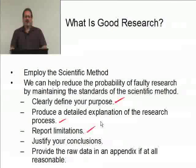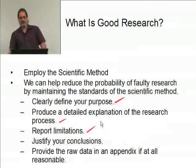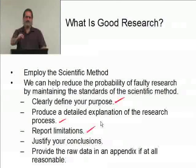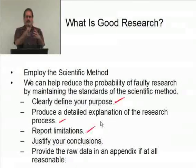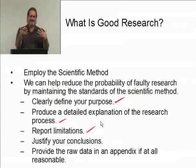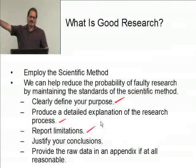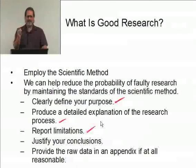Report limitations. You may be interested in everyone with type 1 diabetes on the planet, but your sample may only come from a particular hospital in a particular city, making it very difficult to generalize to that huge population. State it. Say clearly that this is a limitation. Although the sample may be representative of people in this area, it may or may not generalize to people in other states. If there are clear limitations in your research, state them. Be up front with your reader — you're not trying to hide anything.